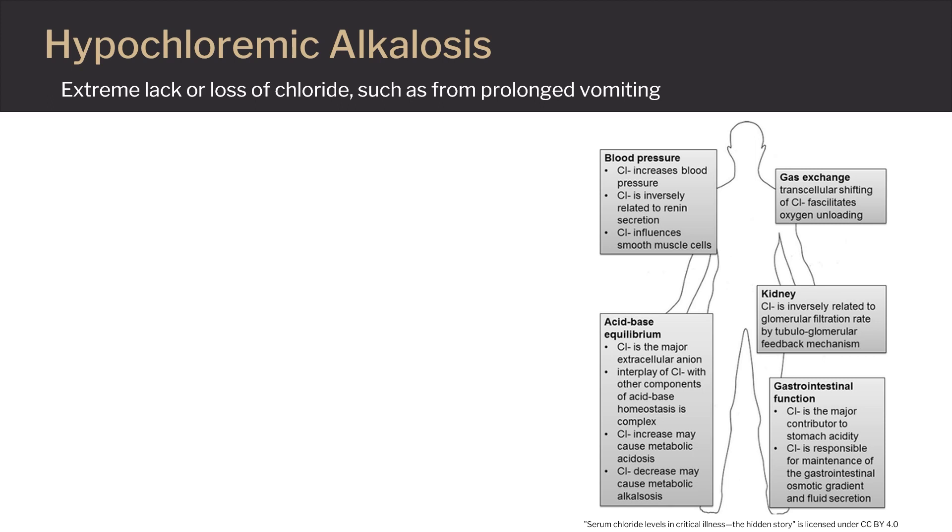Hypochloremic alkalosis occurs when there's a significant decline of chloride in the body. This can be due to prolonged vomiting or sweating. Chloride is an important chemical needed to maintain balance in bodily fluids, and it's an essential part of the body's digestive fluids.